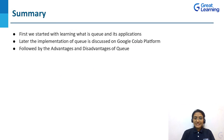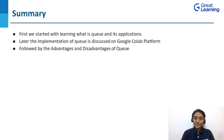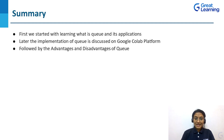We have come to the last section: the summary. Let's recap what we learned in this video. We learned what a queue is, the different applications of the queue, how it is represented, and the different operations performed on it. We then implemented a queue program on Google Colab, an online Python IDE that is accessible to everyone. After understanding the results, we learned the advantages and disadvantages of using a queue.